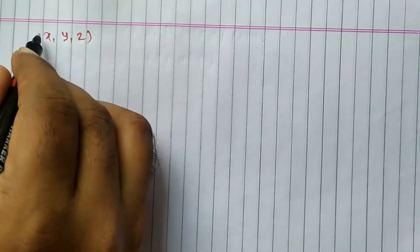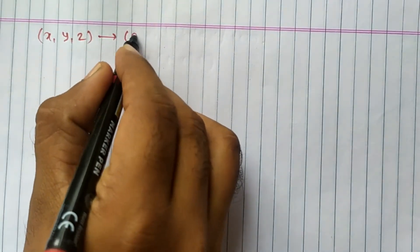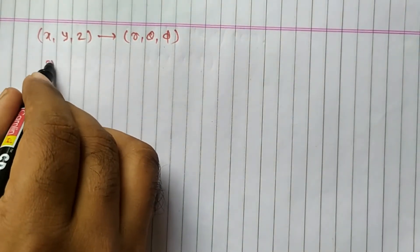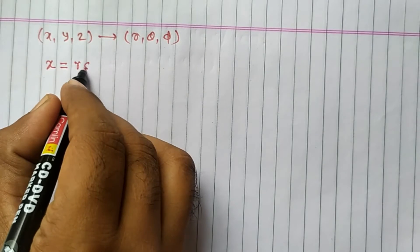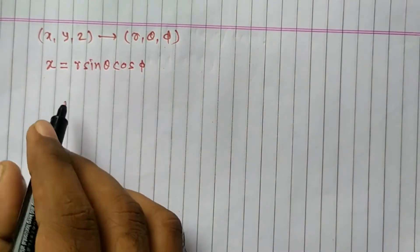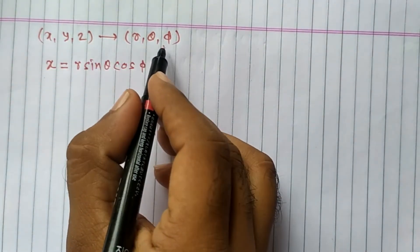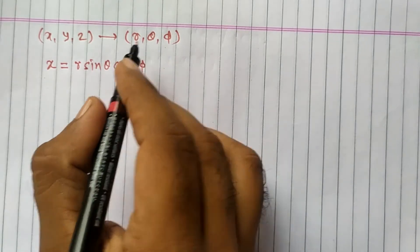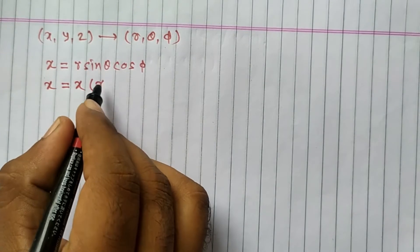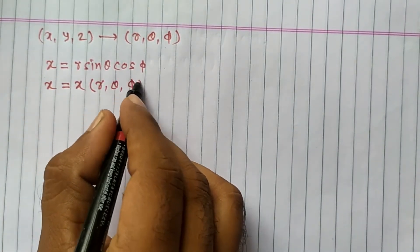Good morning and welcome to this lecture. In the last lecture we saw the relationship between x, y, z and r, theta, phi coordinates. So I can write x is equal to r sin theta cos phi. This is the spherical coordinate system.